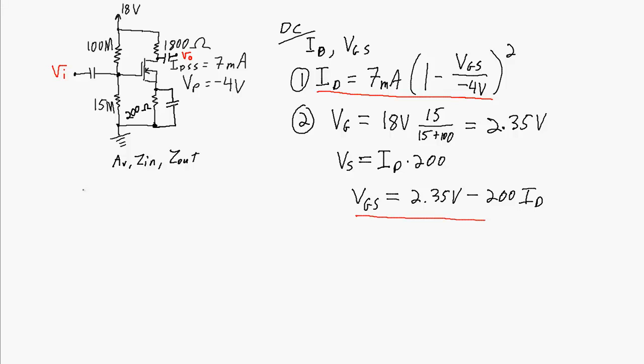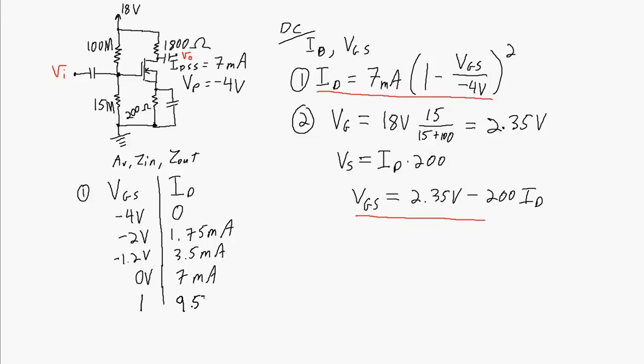When I plot these for that first equation, I'm going to have a few points for VGS and ID. At minus 4 volts, which is VP, drain current will be zero. At half of VP, drain current is 1.75 milliamps. At minus 1.2 volts, 3.5 milliamps. At 0 volts, drain current will be IDSS or 7 milliamps. And to highlight the fact that I can have positive VGS, at 1 volt I get 9.53 milliamps.